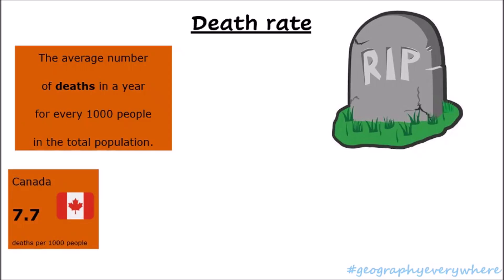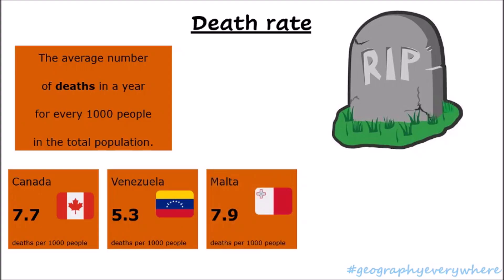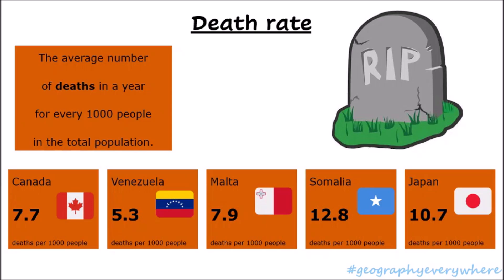Canada's death rate is 7.7. Venezuela's is 5.3. Malta's is 7.9 deaths per 1,000 people. Somalia's is 12.8. And Japan's is 10.7. You can see that in these five different countries, the death rate is also very different. Somalia has the highest death rate, and Venezuela has the lowest death rate.